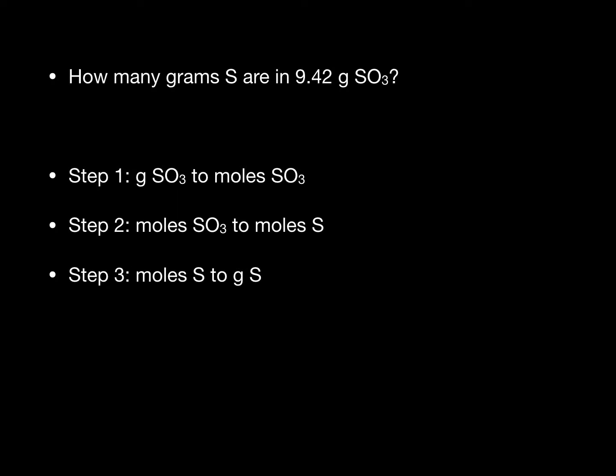Finally, we will convert from moles of sulfur to grams of sulfur. We will do this using the molar mass of sulfur obtained from the periodic table. So these are the three basic steps we will use to convert grams of sulfur trioxide to grams of sulfur. This is a pretty common type of chemistry problem you might encounter in chemistry.